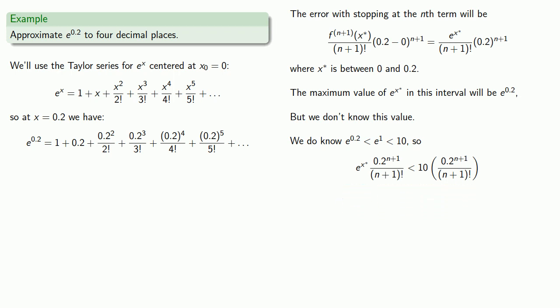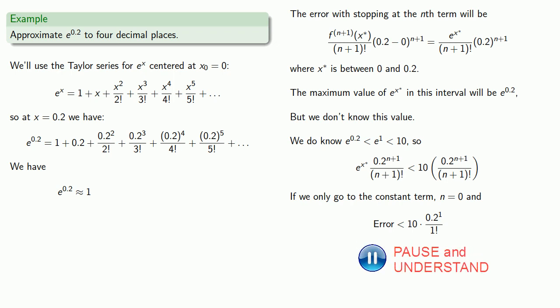So this tells us the error with stopping at the nth term. So how far do we have to go? Well, if you don't play, you can't win. So let's start by adding some terms. If we only go as far as the constant term, n is equal to 0, and so our error will be less than 10 times 0.2 to power 1 over 1 factorial, which is equal to 2. Since we want to approximate e to power 0.2 to 4 decimal places and our error is less than 2, we can't guarantee that we're accurate enough. Our error is too big, so we need to include the next term.